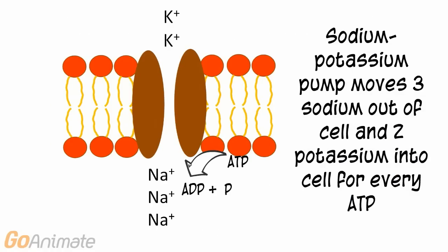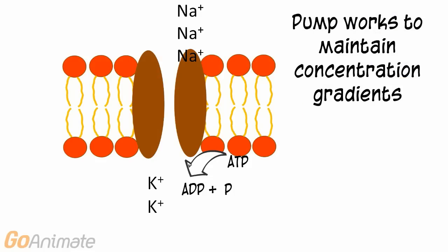An example of an active transport protein is the sodium-potassium pump. The sodium-potassium pump moves three sodium outside of the cell and two potassium inside of the cell for every molecule of ATP used. The sodium-potassium pump works to maintain concentration gradients.